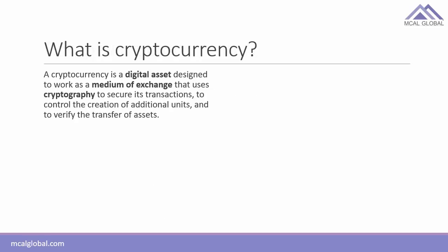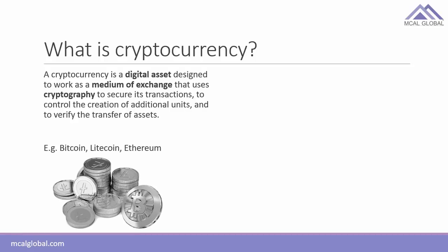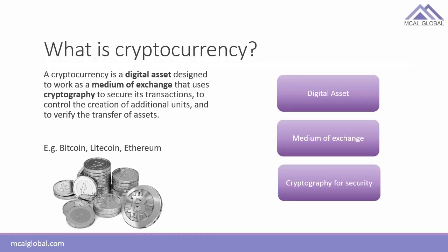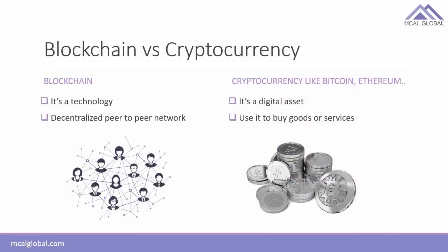What is cryptocurrency? Cryptocurrency is a digital asset designed to work as a medium of exchange that uses cryptography to secure its transactions, control the creation of additional units, and verify the transfer of assets. Examples include Bitcoin, Litecoin, and Ethereum. Three big ideas: digital asset, medium of exchange, and cryptography for security. It's very important to understand that blockchain and cryptocurrency are two different things — blockchain is a technology, a decentralized peer-to-peer network, whereas cryptocurrency like Bitcoin or Ethereum is a digital asset used to buy goods or services.